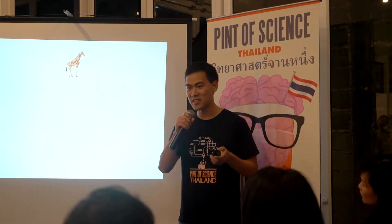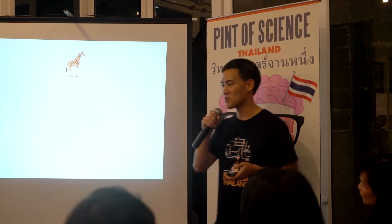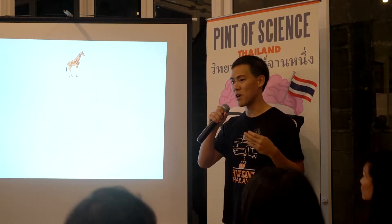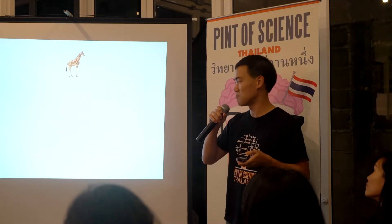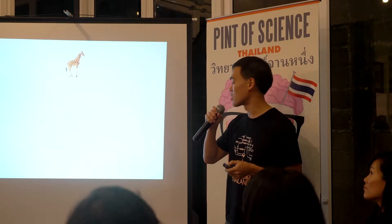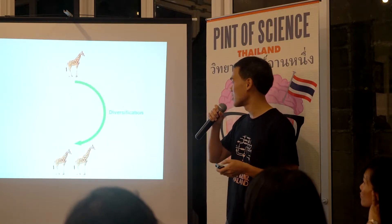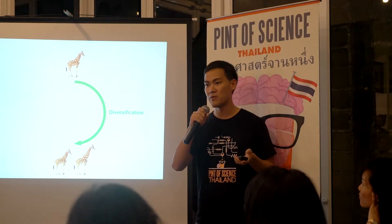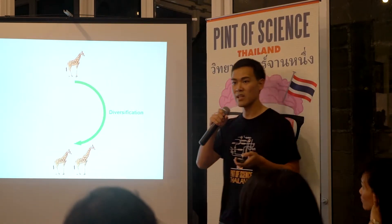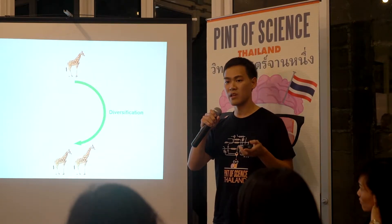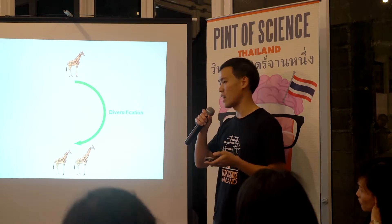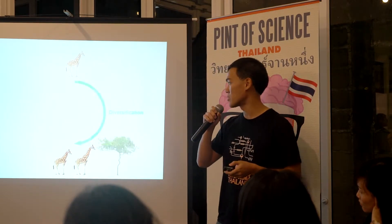The best example of evolution I could think of is actually the evolution of the neck of the giraffe. In the beginning, the giraffe had a shorter neck. Because of the diversification process, the offspring of short-necked giraffes have different neck lengths — they can have a shorter neck than their parents, the same neck length, or a longer neck length.